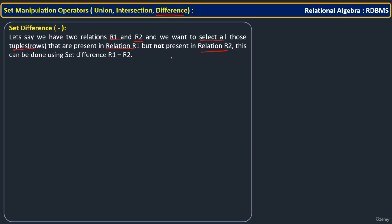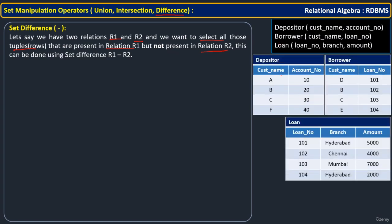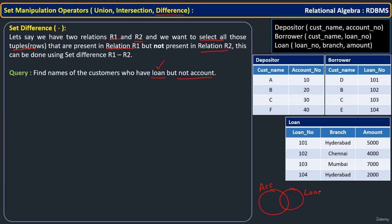To get more clarity, let us take the same set of tables and their data. We will have a simple query: find the names of the customers who have a loan but not an account. For example, D has a loan but doesn't have an account, so D should appear in the result. But B has a loan as well as an account, so B should not come in the result. From the loan set, you skip the common part with the account set.